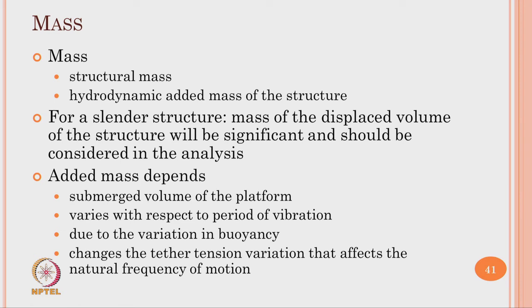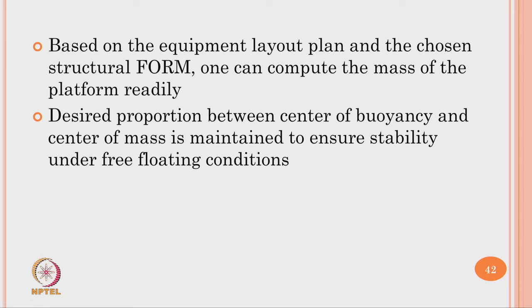There are two kinds of mass in dynamic analysis: structural mass and hydrodynamic added mass. For a slender structure, the structural mass is the mass of the displaced volume — significant for floating slender structures. The added mass depends on the submerged volume of the platform; it varies with respect to the period of vibration and is also due to variation in buoyancy and change in tension variation, which affects the natural frequency of motion. A desired proportion between the centre of buoyancy and centre of mass is maintained to ensure stability even under free-floating conditions.